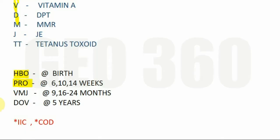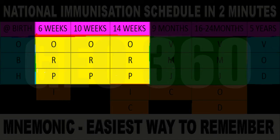At 6, 10, and 14 weeks you have to remember the mnemonic PRO. PRO means something great — at 6 weeks the child does some activities and impresses you, maybe feels like a pro. So P stands for pentavalent vaccine, R for rotavirus vaccine, and O again for oral polio vaccine.